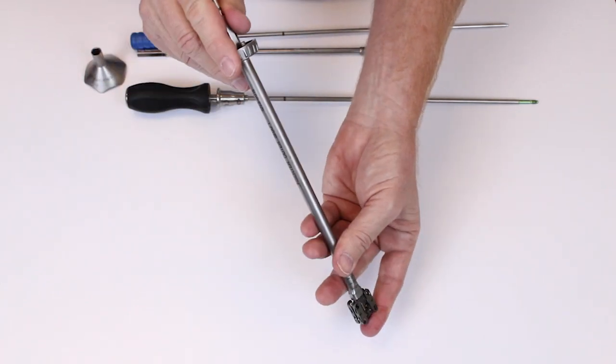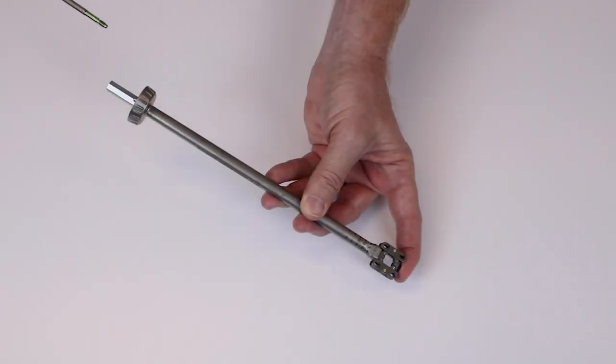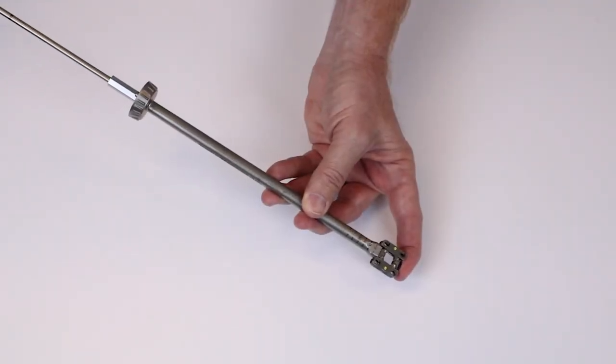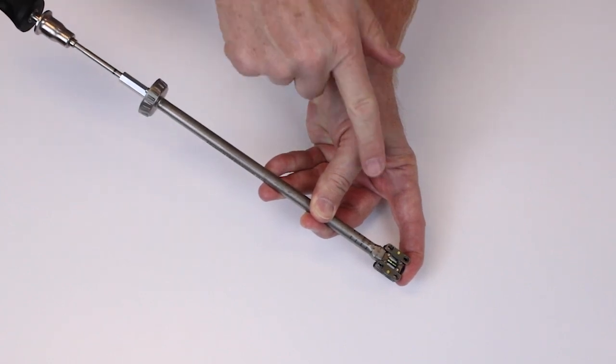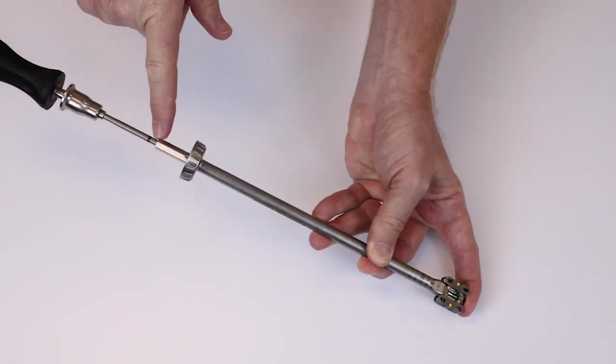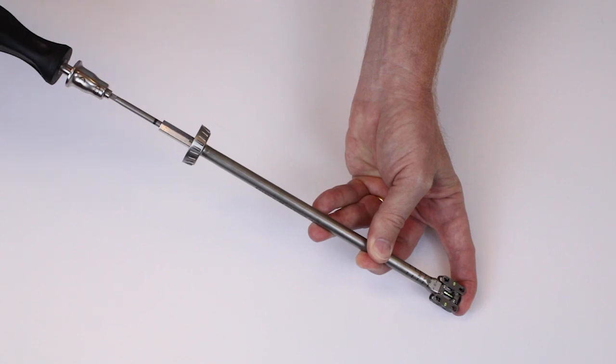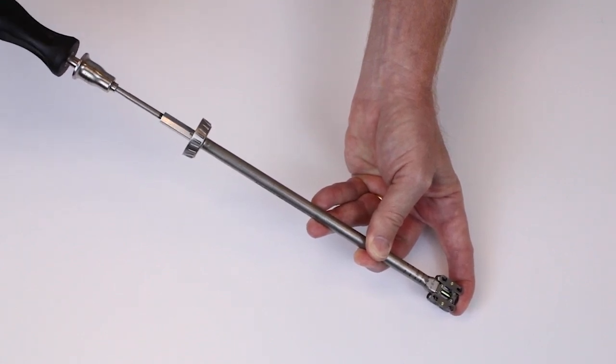Once the lockout screw engages the opposite nose, keep an eye on this laser mark and watch it track down to the shoulder of the tube. Once it gets there...